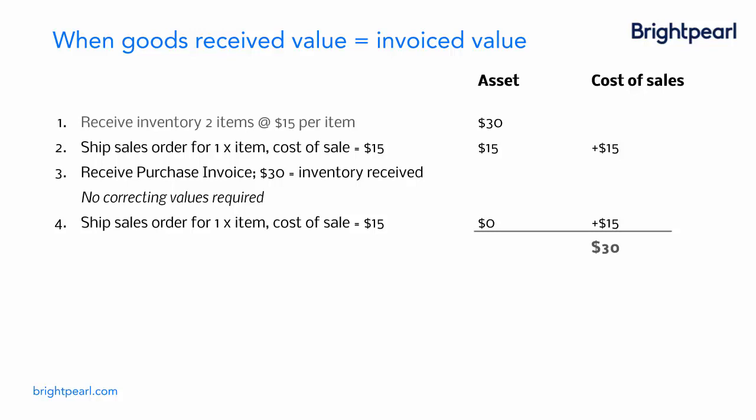Finally in step four, we ship a sales order for one item. Again the cost of sale is $15, which brings our inventory asset down to $0 and adds another $15 to cost of sales, so the total cost of sale is $30. All of the inventory asset has transferred into cost of sales — and that's the end goal.